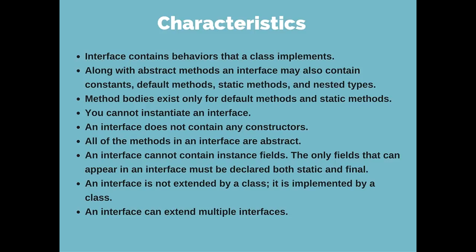Method bodies can exist only for default and static methods — you can't have method bodies for methods you yourself declare. You cannot instantiate an interface, which means you can't create an object for it. This is why interfaces provide 100% abstraction, while abstract classes — which can have abstract as well as non-abstract methods — offer 0 to 100% abstraction.